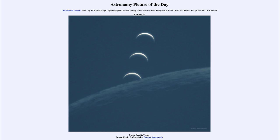The Moon here, as this is taken, is also a very thin crescent, and it is getting very close to new Moon. And in fact, very soon the Moon will be a new Moon, and will pass directly in front of the Sun. So the Moon will also occult the Sun.